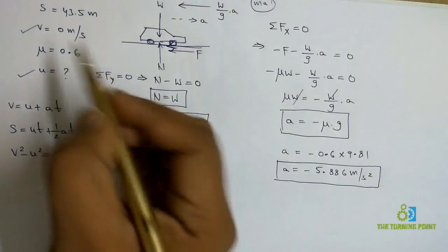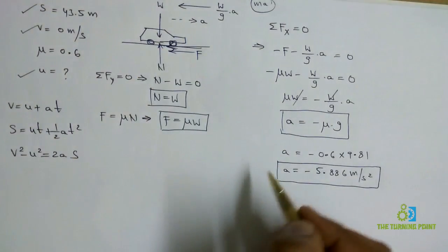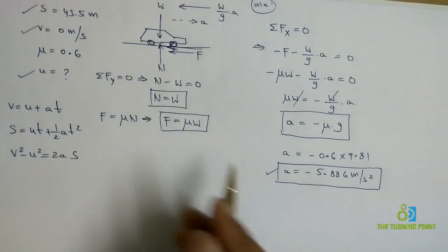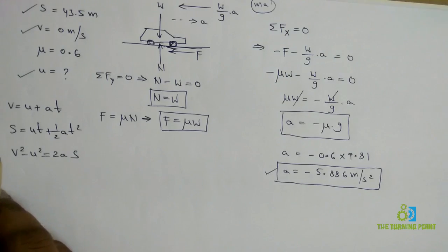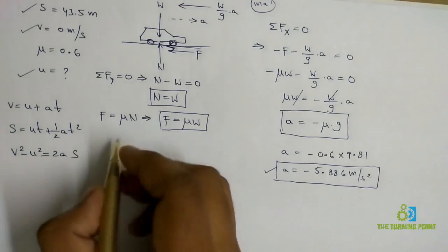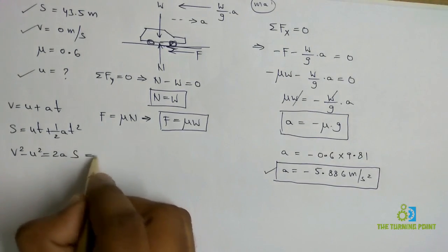Observe the given parameters: V is there, u is there, S is there, and a is there. What is the equation associated with these four parameters? Which is nothing but V² - u² = 2aS.